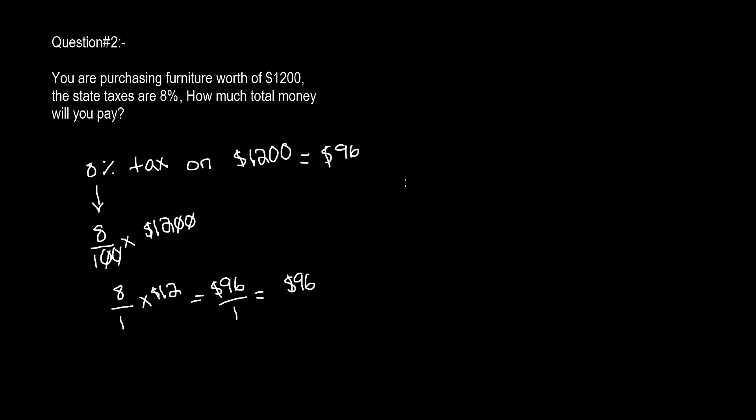But in total, if you add the $1,200 plus the amount of tax, which is $96, we get $1,296. That is the total amount of money that I will have to pay in order to get my furniture. This is the total amount of money with my state tax.